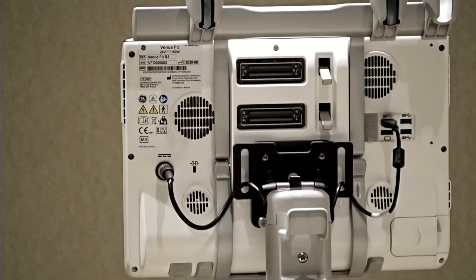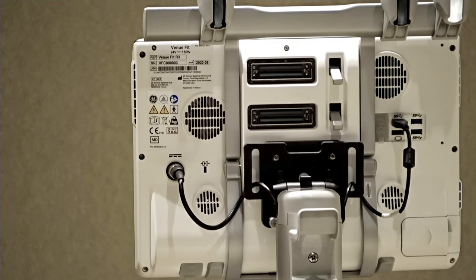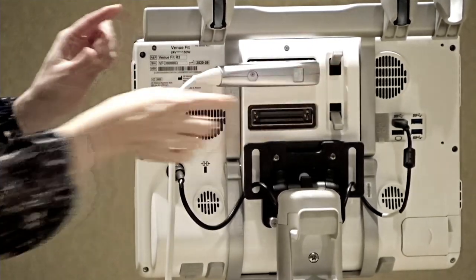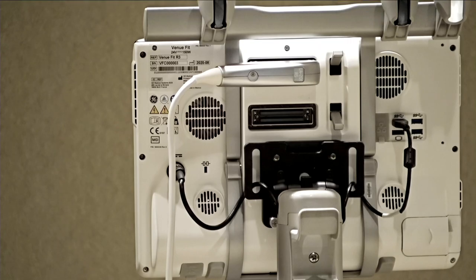The Venue Fit has two probe ports on the back of the system. To connect a transducer, insert the probe into the port, then lift the lever to lock it in place. To remove the probe, lower the lever, then pull it straight out.